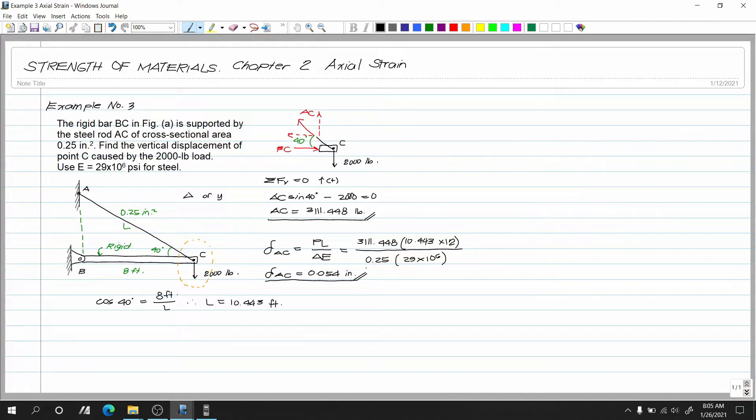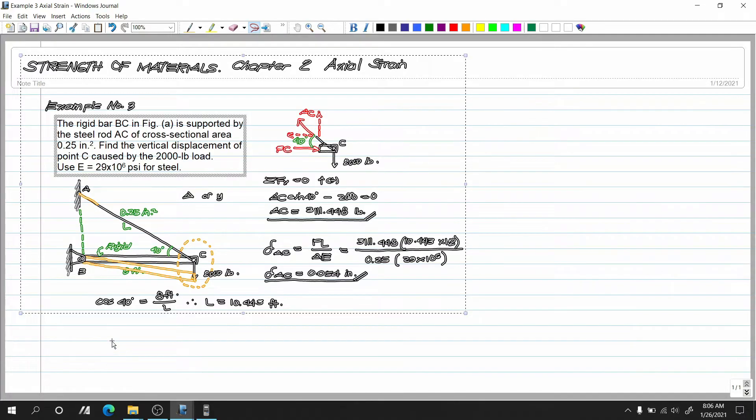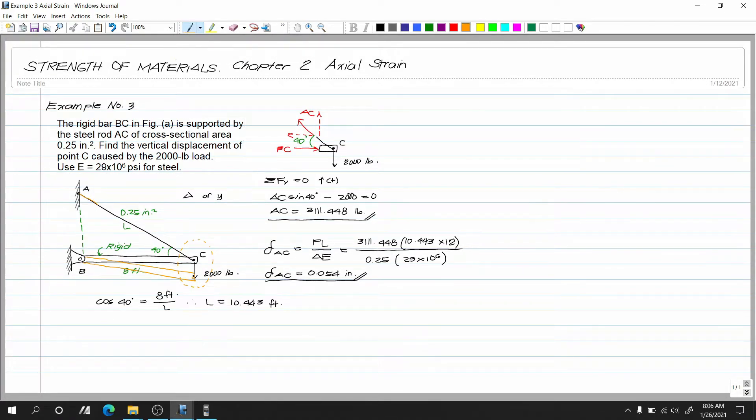So ngayon, ano mangyayari doon sa ating C? So sa rito, mababa ito eh. Baba yung ating BC. So ganyan to mangyayari. Ayan. I mean, bababa yung C, yung point C. Puma ba sya rito? Ayan. May hila to. May hila yung ating cable. Ayan. May hila sya rito. Ayan. So ganyan ang nangyari dyan.